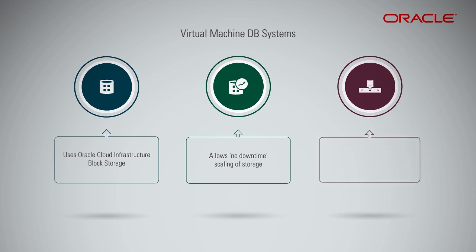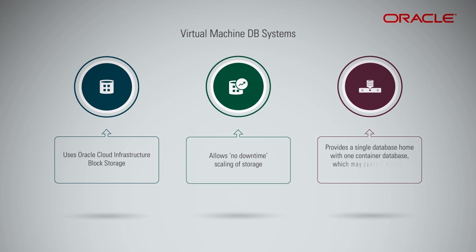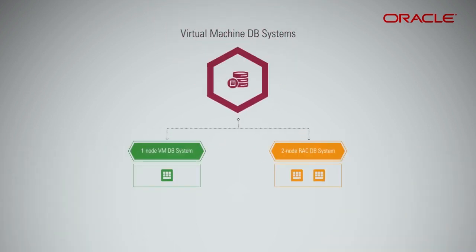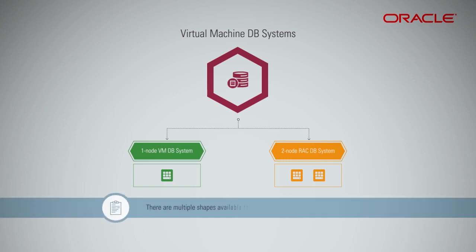This DB system provides a single database home with one container database, which may contain multiple pluggable databases. When you launch a DB system, you choose a shape, which determines the resources allocated to the DB system. There are multiple shapes available for a virtual machine DB system on X7.